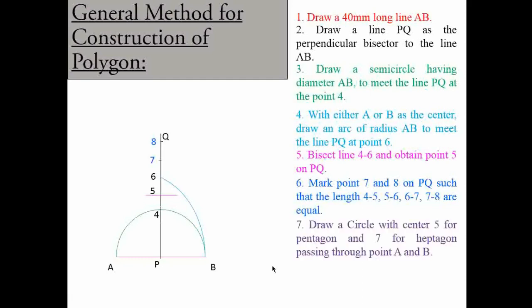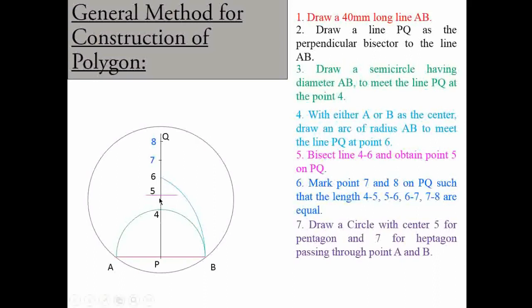The next step is to draw a circle with center 5 for a pentagon, or center 7 for a heptagon, passing through points A and B. By considering the 5th point as center and 5 to A as radius, we draw the circle, and you will find that the circle also passes through point B. This circle has been created using 5th point as center and 5A as radius.